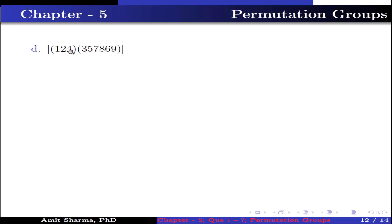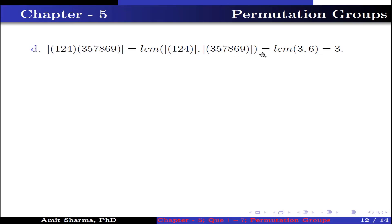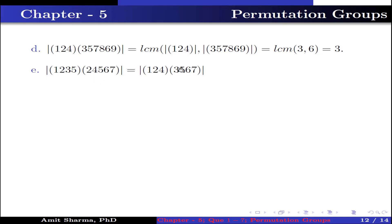Part D: order of (1 2 4)(3 5 7 8 6 9) equals LCM of order of (1 2 4) and order of (3 5 7 8 6 9). (1 2 4) is a 3-cycle and (3 5 7 8 6 9) is a 6-cycle, so LCM(3, 6) = 6. Therefore the order is 6. Part E: order of (1 2 3 5)(2 4 5 6 7). These are not disjoint — they share common elements — so we must first multiply them. The product gives (1 2 4)(3 5 6 7), which are disjoint. Order = LCM(3, 4) = 12.